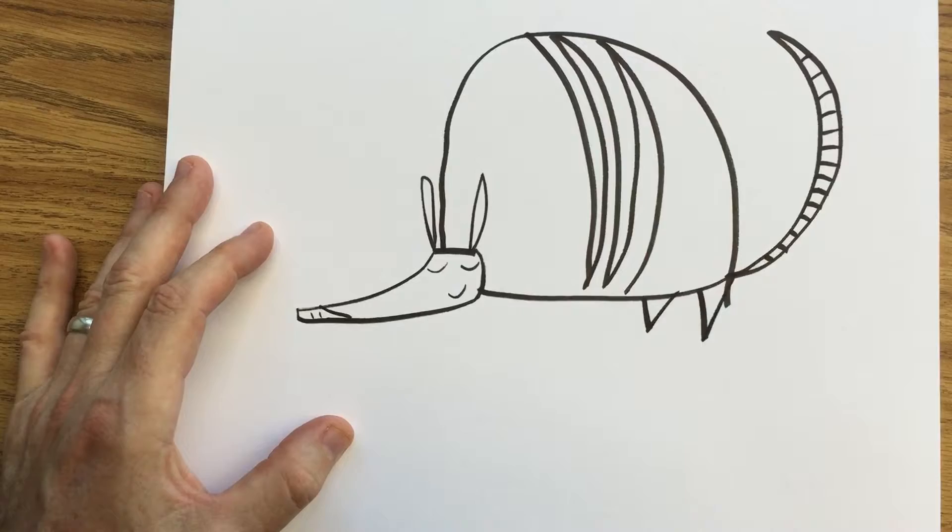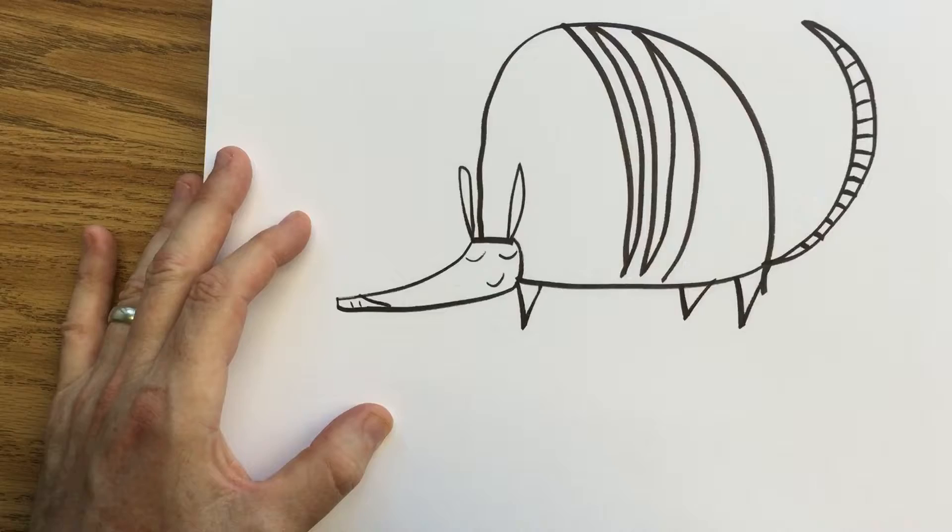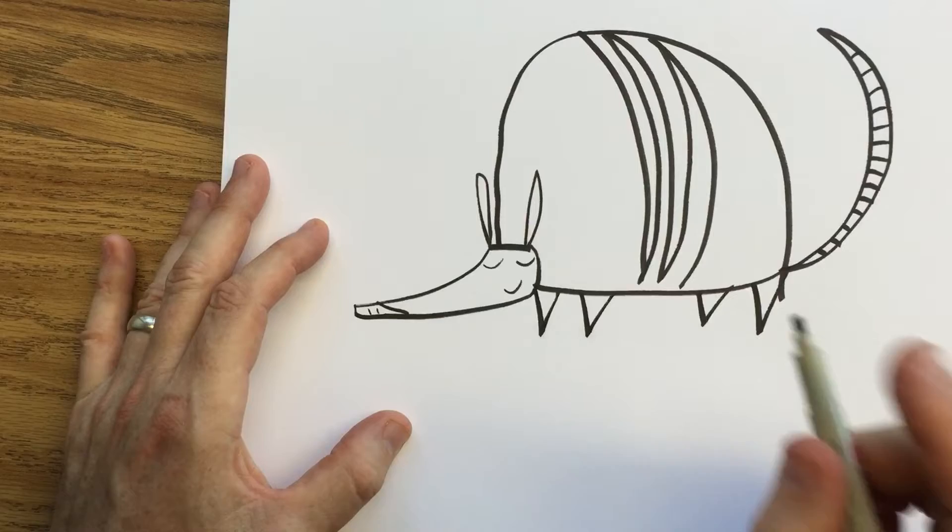And then right here where the head, his little cheek, touches that helmet portion, his body, another little V. And then right about here, another little V. And there's his four little legs. But wait, that's not all.